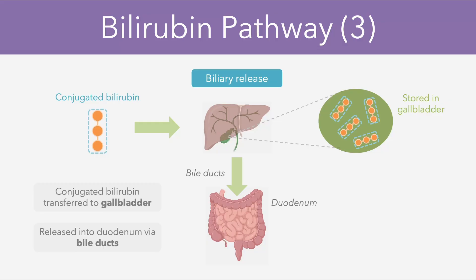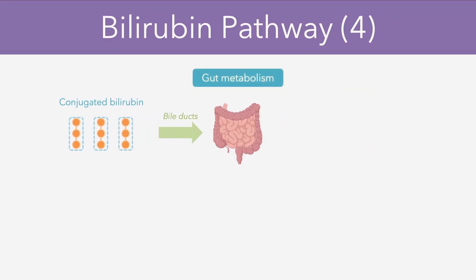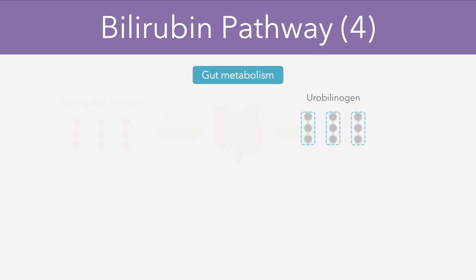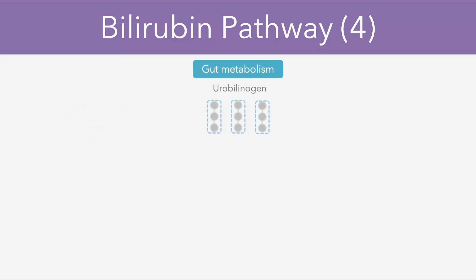This brings us on to the final stage of the bilirubin pathway, which involves gut metabolism itself. The conjugated bilirubin molecules which are now in the small intestine are broken down by gut bacteria into a compound known as urobilinogen. Around 80% of the molecules are converted to stercobilin, which is a dark-coloured compound that's excreted into the stool, and it's what gives feces its brown colour.